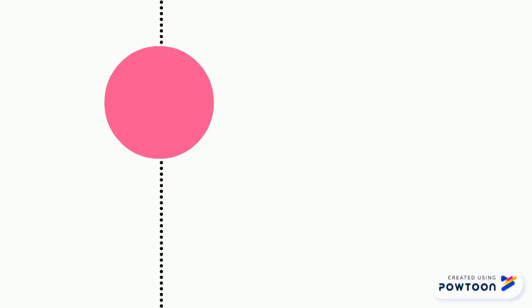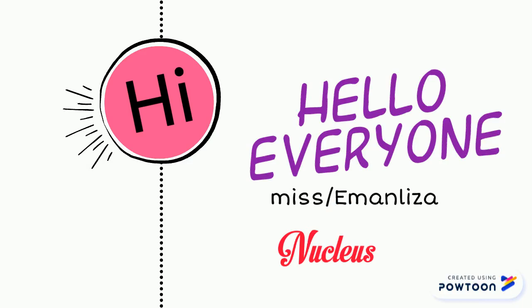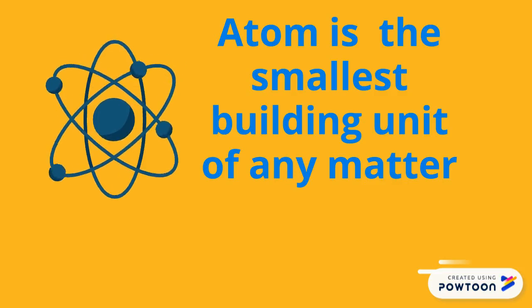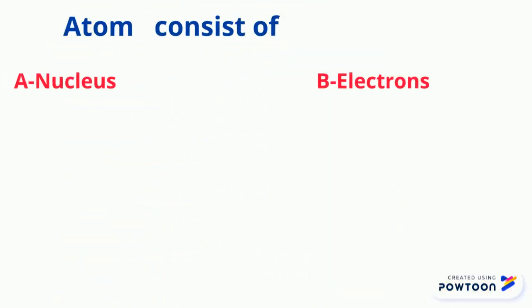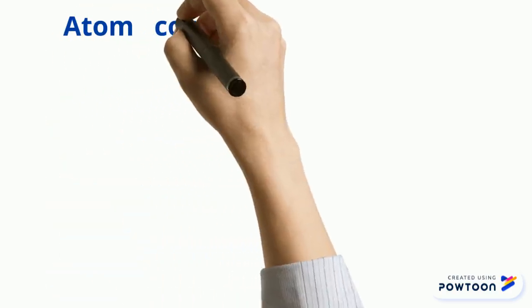Well, the answer is stored inside the nuclei. Let's see what's first inside the nucleus and try to find out the difference between atomic number and mass number. Before we know what is meant by atomic number and mass number, we have to know what is meant by an atom. An atom is the smallest building unit of any matter. We have to know what is inside the atom — an atom consists of two main particles.